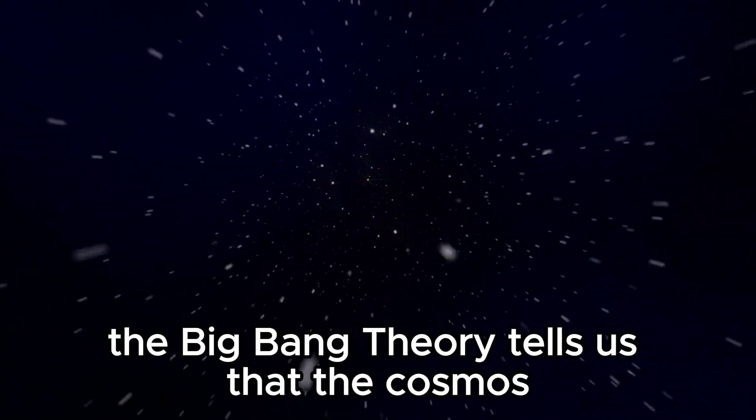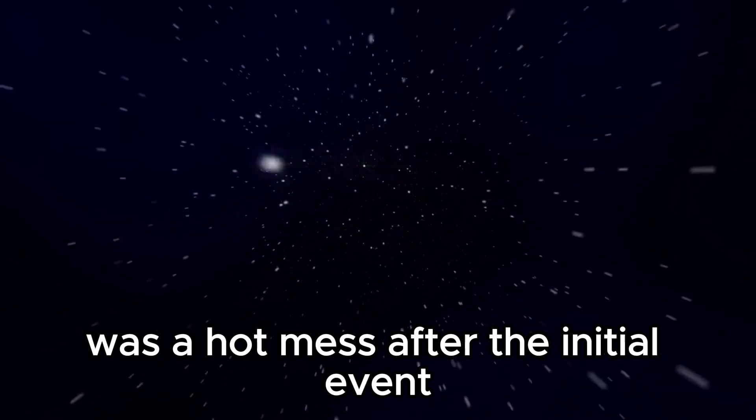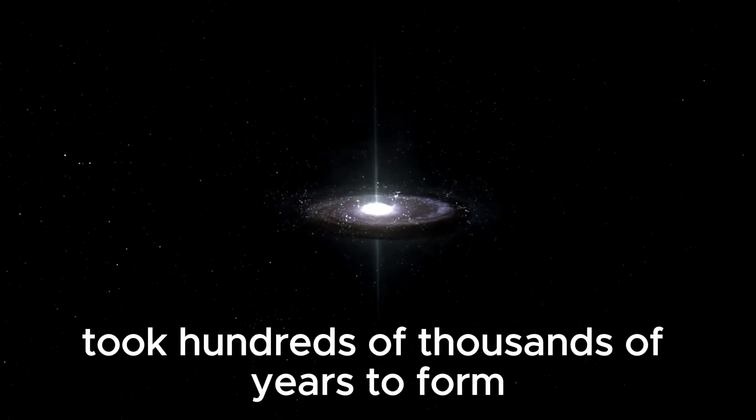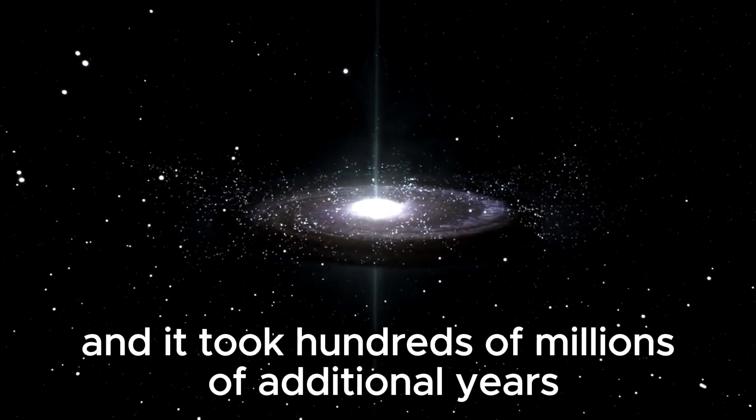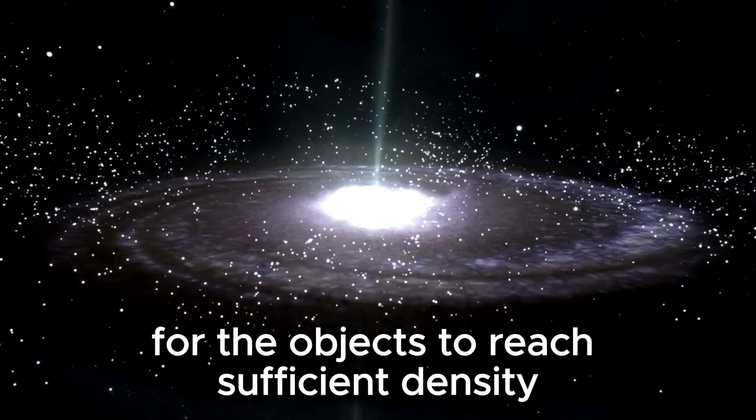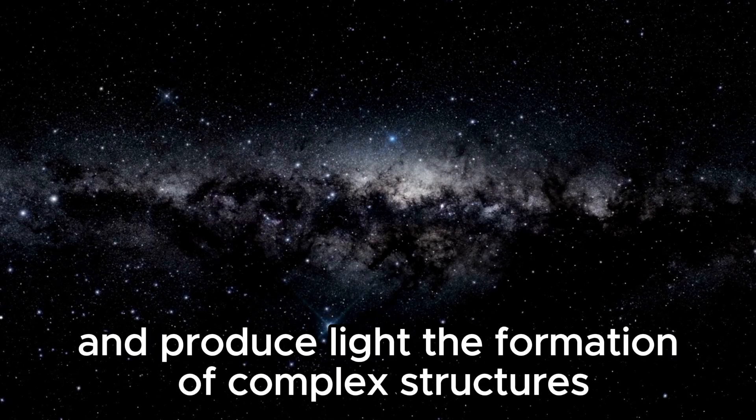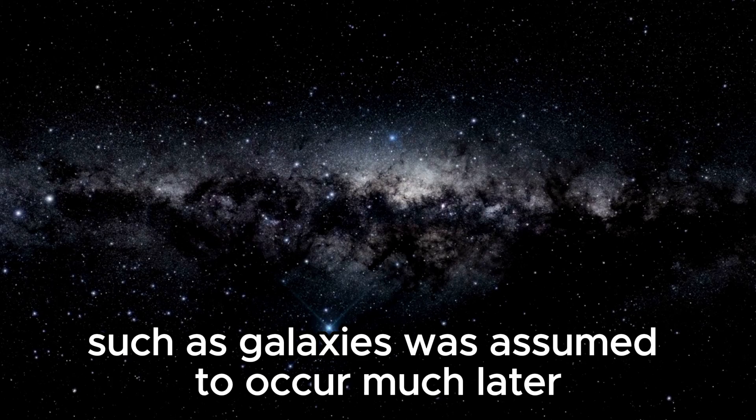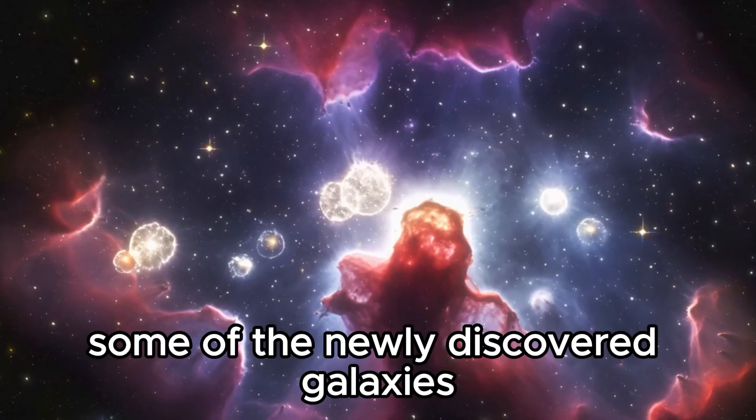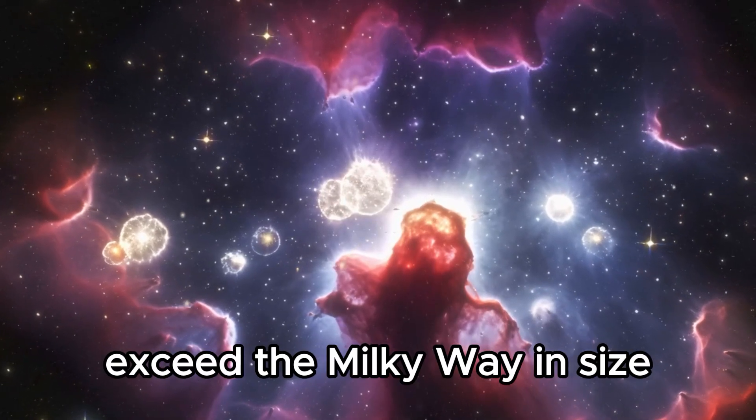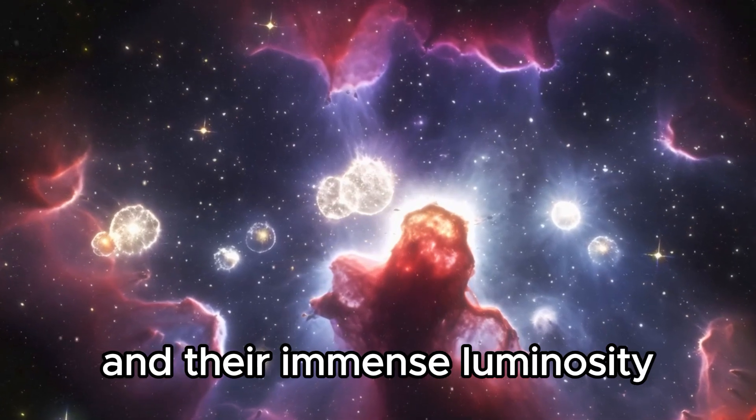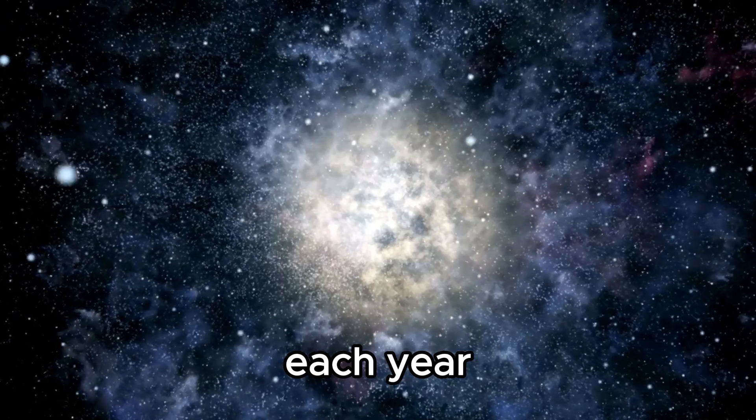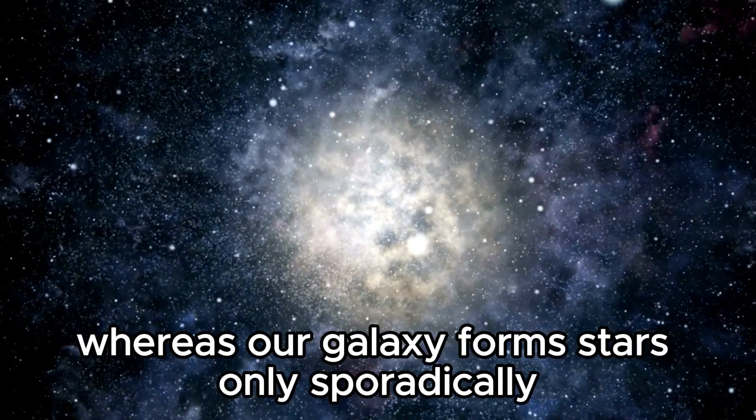The Big Bang theory tells us that the cosmos was a hot mess after the initial event. The first solid objects took hundreds of thousands of years to form, and it took hundreds of millions of additional years for the objects to reach sufficient density and produce light. The formation of complex structures such as galaxies was assumed to occur much later. Some of the newly discovered galaxies exceed the Milky Way in size, and their immense luminosity indicates that they were probably forming hundreds of new stars each year.